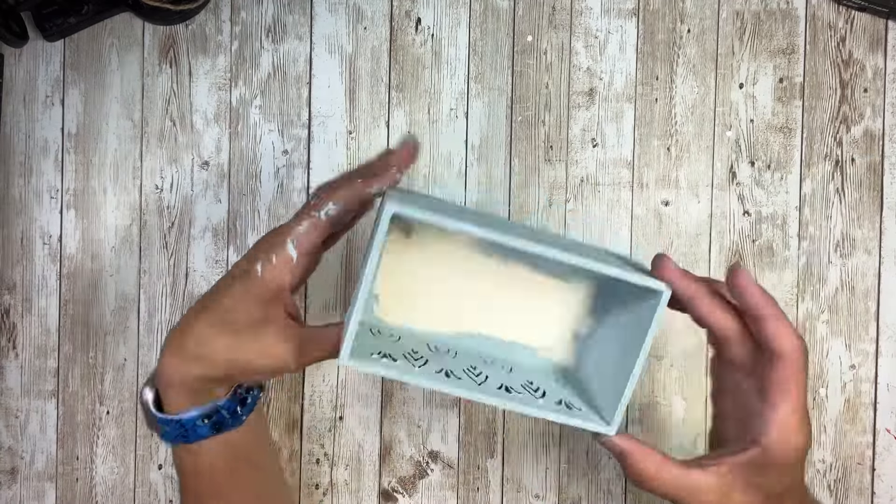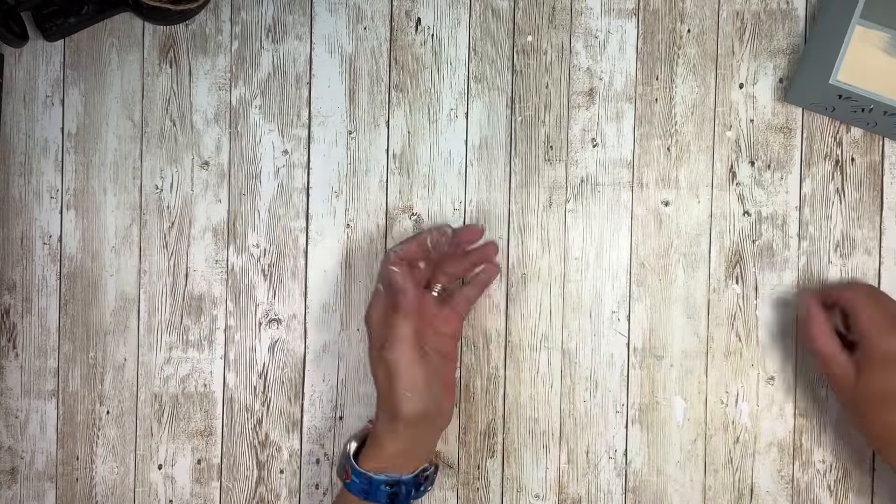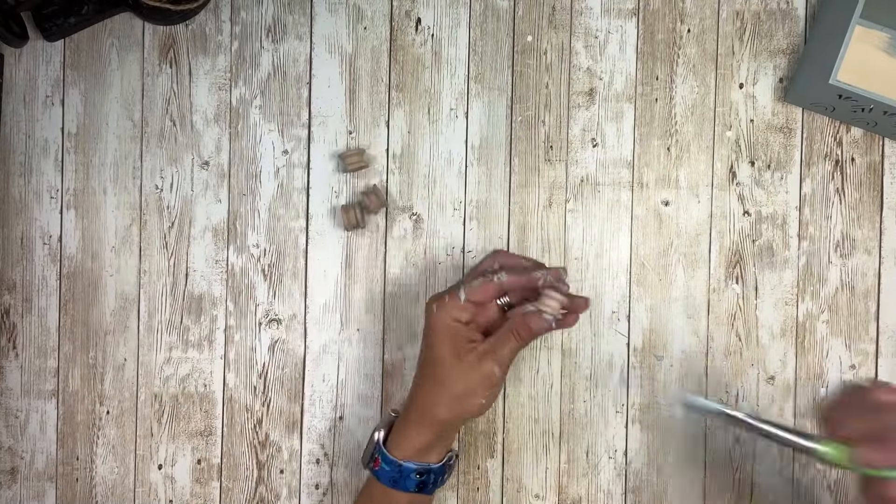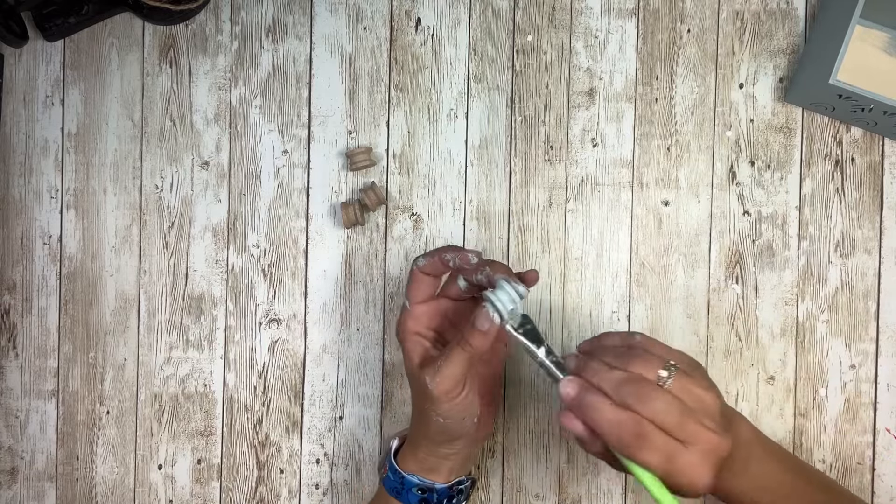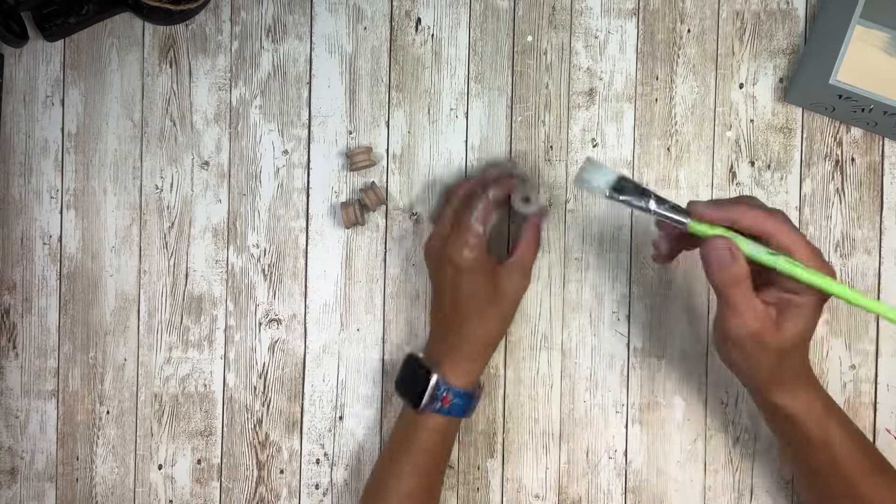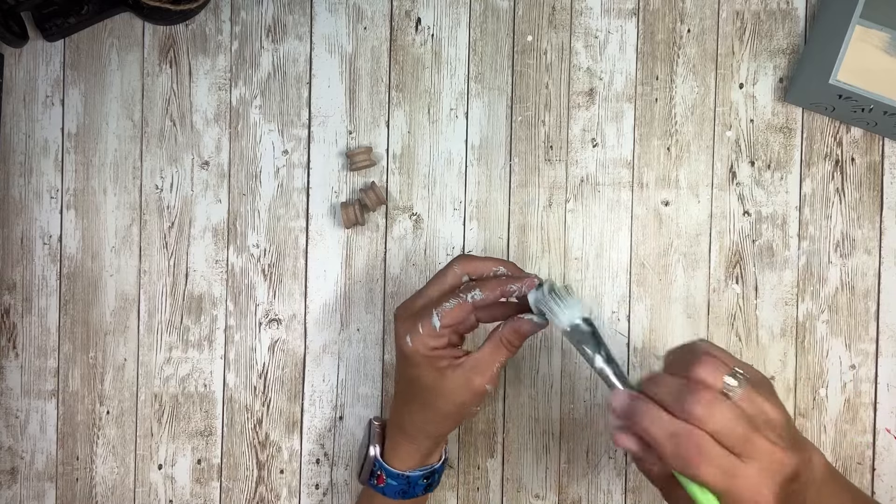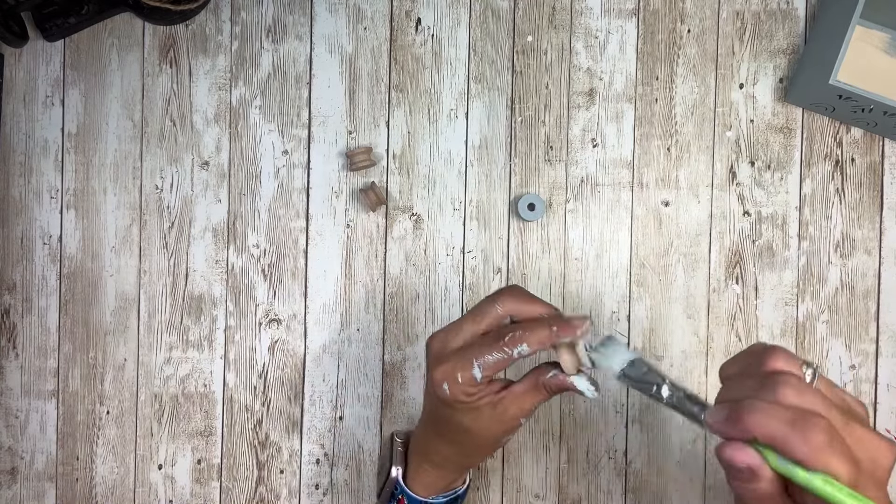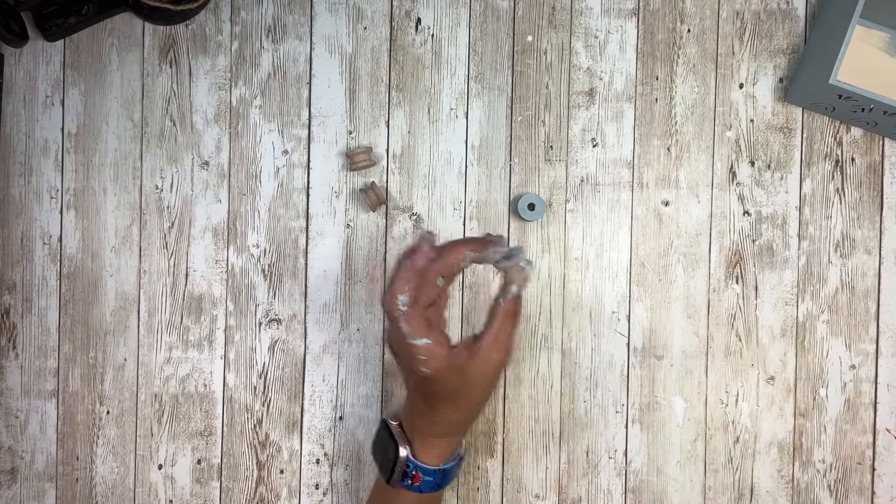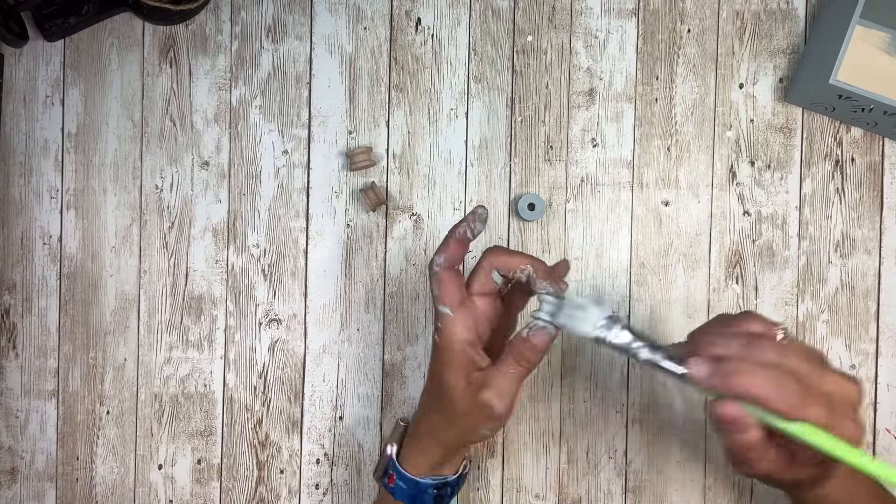Once I had it all painted, I'm going to set that aside for a minute. I'm going to use these little spools. I'm going to paint each one of them with the same color that I painted the box. And I had four of them. I'm just going to give them a quick coat of paint on all of them and then let those fully dry as well.